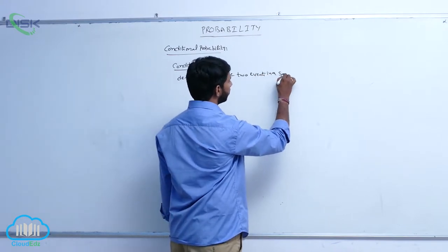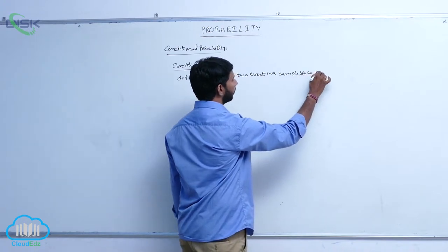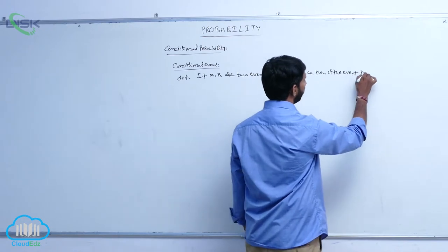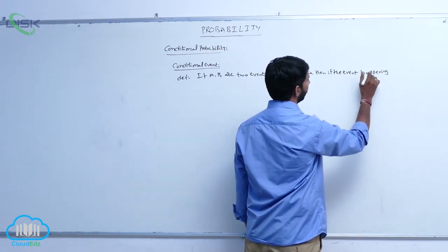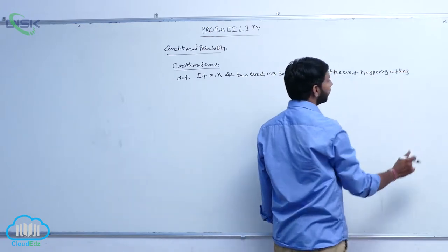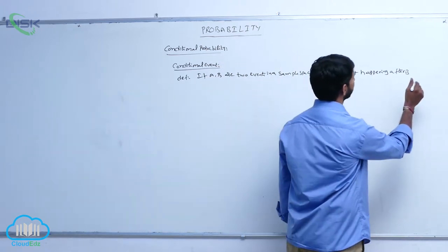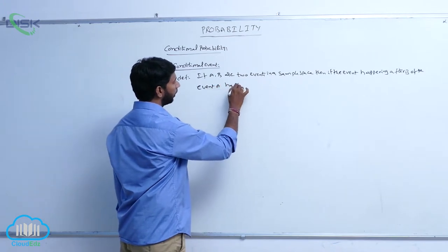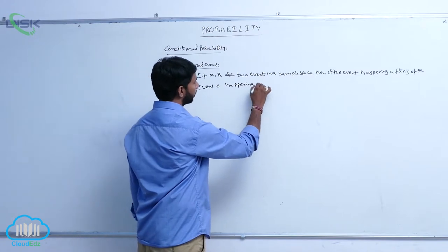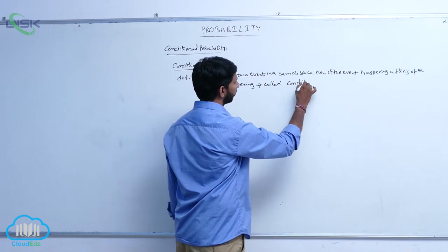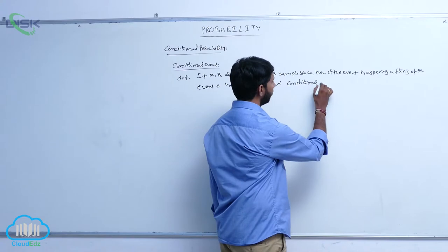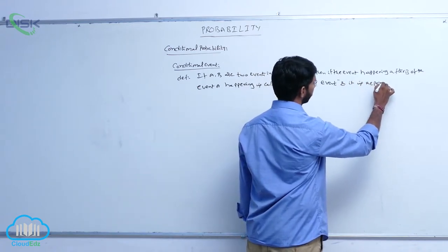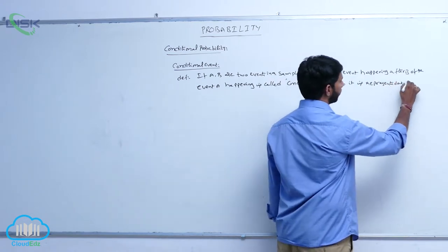then if the event of capital A happening after B is called a conditional event, and it is represented as B given A.